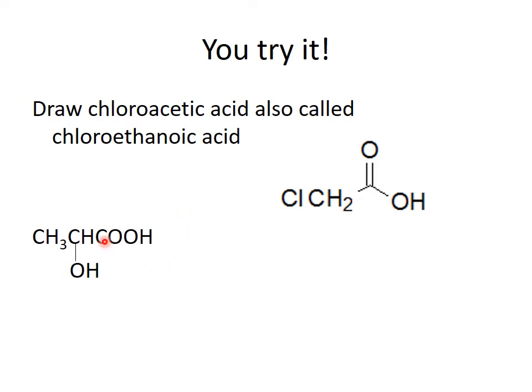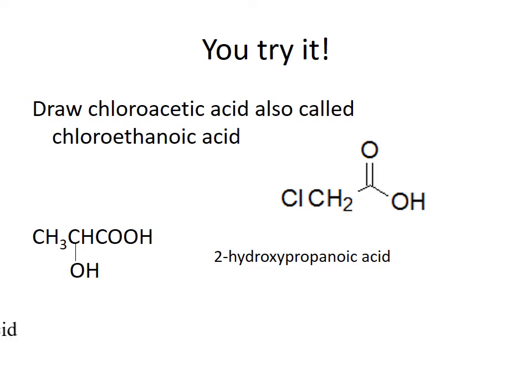Name this compound. Well, this is a three-carbon compound, so it's going to be propanoic acid. Notice you have a hydroxyl group on the alpha carbon, or the number two carbon. So we call this 2-hydroxypropanoic acid. The common name for this is lactic acid. It's what is called an alpha hydroxy acid, which you may recognize since it's used in cosmetics for smoothing of the skin.